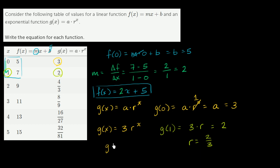g(x) is equal to 3 times 2/3 to the x power. We could write it that way if you want, any which way. So 3 times 2/3 to the x power, and f(x) is 2x plus 5.